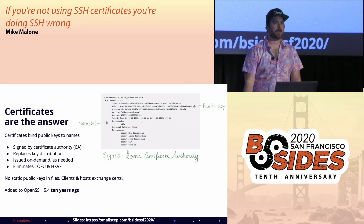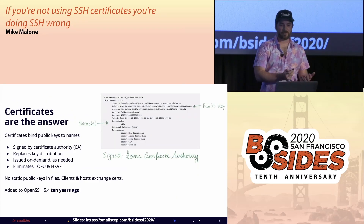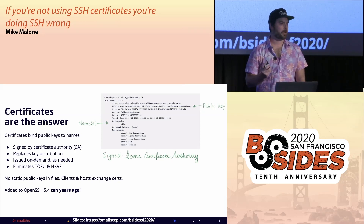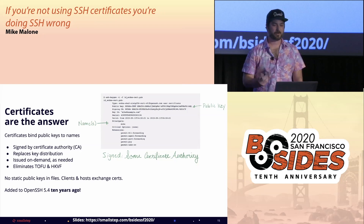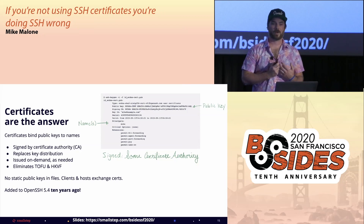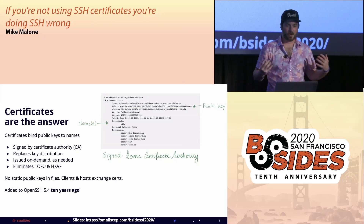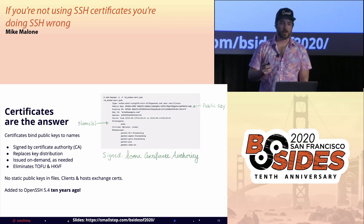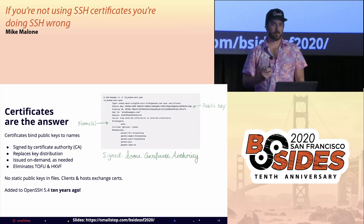Certificates are the answer. A certificate is a data structure that binds a public key to a name. Certificates are signed by a certificate authority so you can trust them. Certificate authentication eliminates key approval and distribution — all the annoying, time-consuming stuff we just discussed. With certificates, hosts and clients don't need prior knowledge of one another's public keys to authenticate; they only need to know the CA's public key.